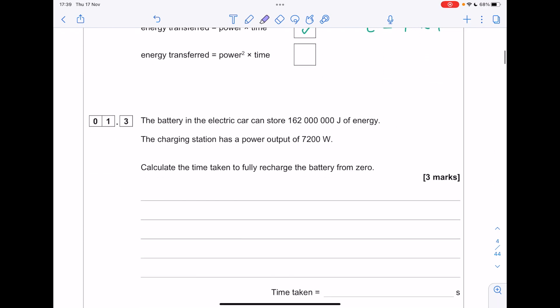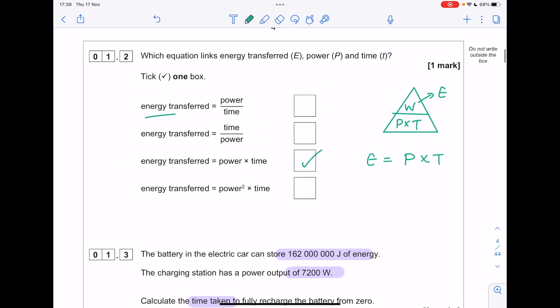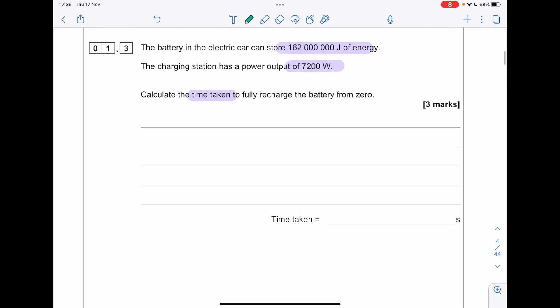The battery in the electric car can store a large amount of joules of energy. The charging station has a power output of this. Calculate the time taken to fully recharge the battery. Cover what we're after. We're after time, which is energy divided by power. Always write out your equation. Substituting your values. We don't need to change any of our units. Our value here is 22,500.